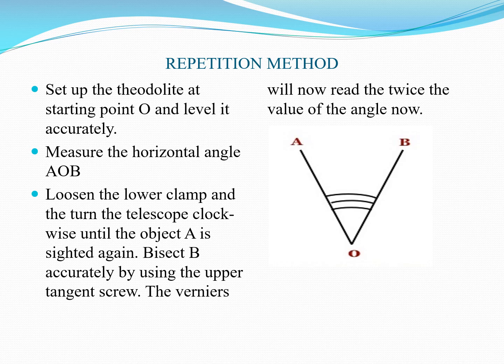Repeat this procedure for a total of three times with face left and three times with face right. The average of the face-left readings and the average of the face-right readings are then averaged together to obtain a very accurate final value of the required horizontal angle AOB.